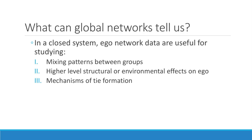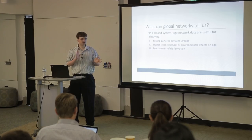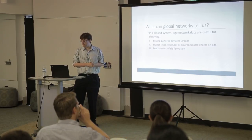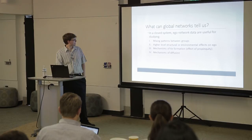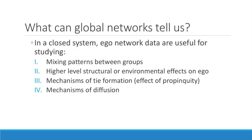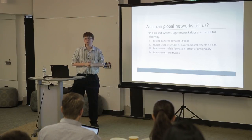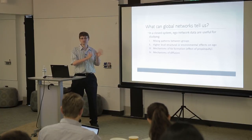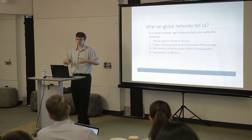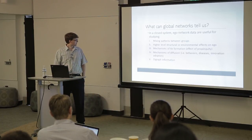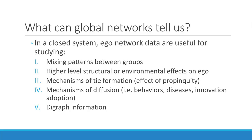Ego networks can also show mechanisms of tie formation — for example, how likely are people to become friends if they share the same class or live near each other. Global networks can also tell us about mechanisms of diffusion: how negative behaviors spread through a network, or how a new innovation spreads. There's a famous yet debunked study showing doctors were more likely to prescribe tetracycline if their network associates were also prescribing it. And global networks can tell us about digraph information — a directed graph where you look at the difference between sending a tie versus receiving a tie.